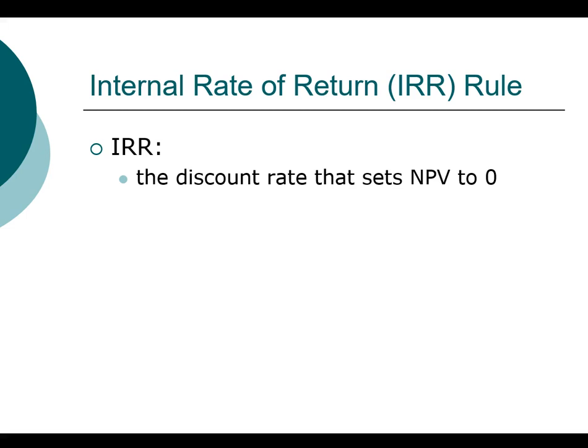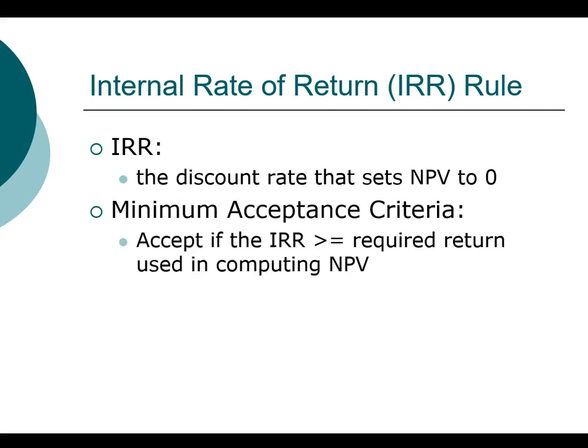If you are using the internal rate of return as a decision criteria, how do you decide if a project is acceptable or not? As we do with every single method, we want to learn how to compute the metric and how to apply the rule to decide whether to accept or reject a project. When projects are independent, they need to meet a minimum hurdle. For the internal rate of return, that means the project must earn at least the required return — the same required return used to compute net present value. The IRR method is closely related to NPV because you can't apply this rule unless you know the minimum required return.